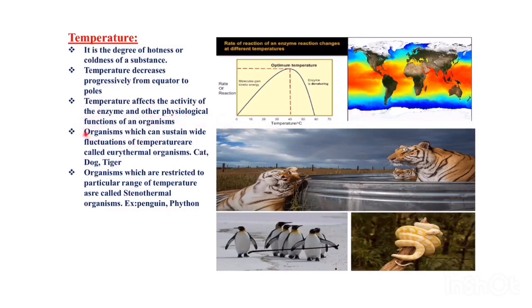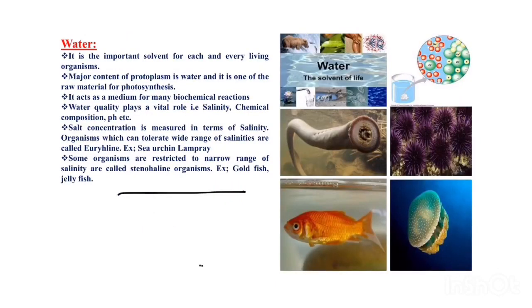Two very important categories are stenothermal and eurythermal organisms. Eurythermal organisms are those which can sustain wide fluctuations in temperature — any sudden change in temperature does not affect their physiology. Examples include cat, dog, tiger, and human beings. Stenothermal organisms are restricted to one particular range of temperature. Examples are penguin and python.